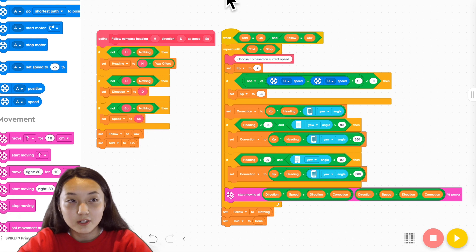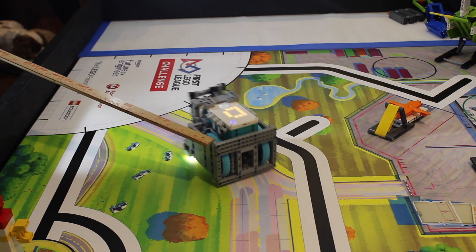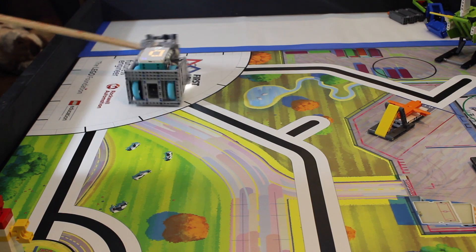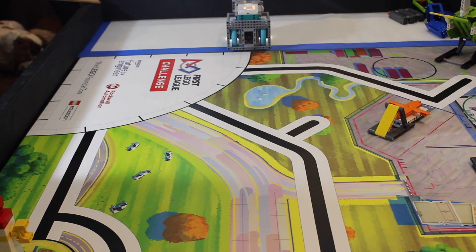We have a program to follow a compass heading using the yaw sensor and proportional control. This stack sets it up and this stack moves the robot while constantly making corrections to the steering by adjusting the speed of each motor.